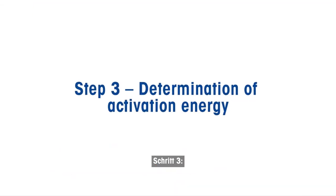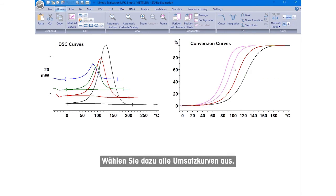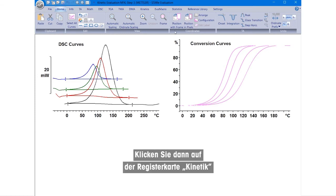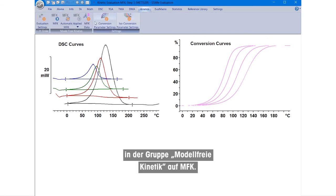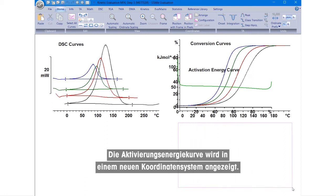Step 3. Next, we would like to obtain the activation energy curve as a function of conversion. To do this, select all the conversion curves and under the Kinetics tab, click on MFK in the Model Free Kinetics group. The activation energy curve is displayed in a new coordinate system.